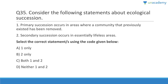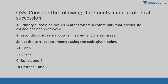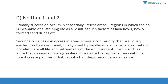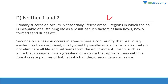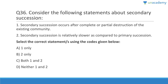Question 35: Primary succession occurs in an area where a community that previously existed has been removed — that is wrong. Secondary succession occurs in an essentially lifeless area — that is also wrong. Answer is D, neither 1 nor 2 — they've flipped it. Primary succession occurs in an essentially lifeless area where there was no life whatsoever, such as regions after lava flow or newly formed sand dunes. Secondary succession occurs in areas where a community that previously existed has been removed.